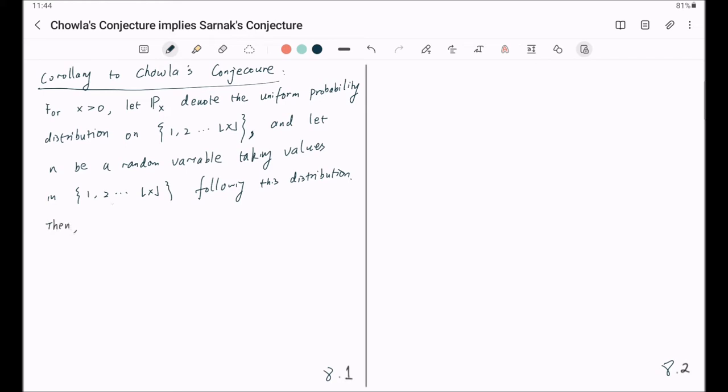Then, assuming Chowla's conjecture, for any M positive integer, any epsilon, and any coefficients C_1 through C_m that are bounded by 1.